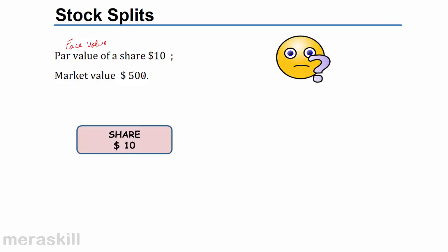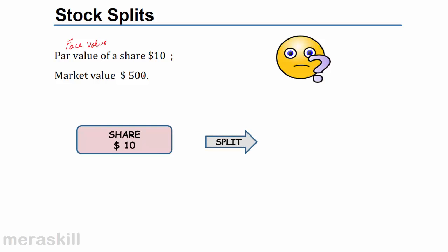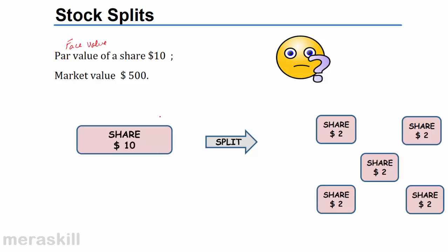Since I am not in a position to invest this, this share of $10 is split. Because the market value of its share has improved so much, many shareholders will not be able to invest in the company because they have smaller amounts. So, what the company may do is take its share of $10 and split it into 5 shares of $2 each.